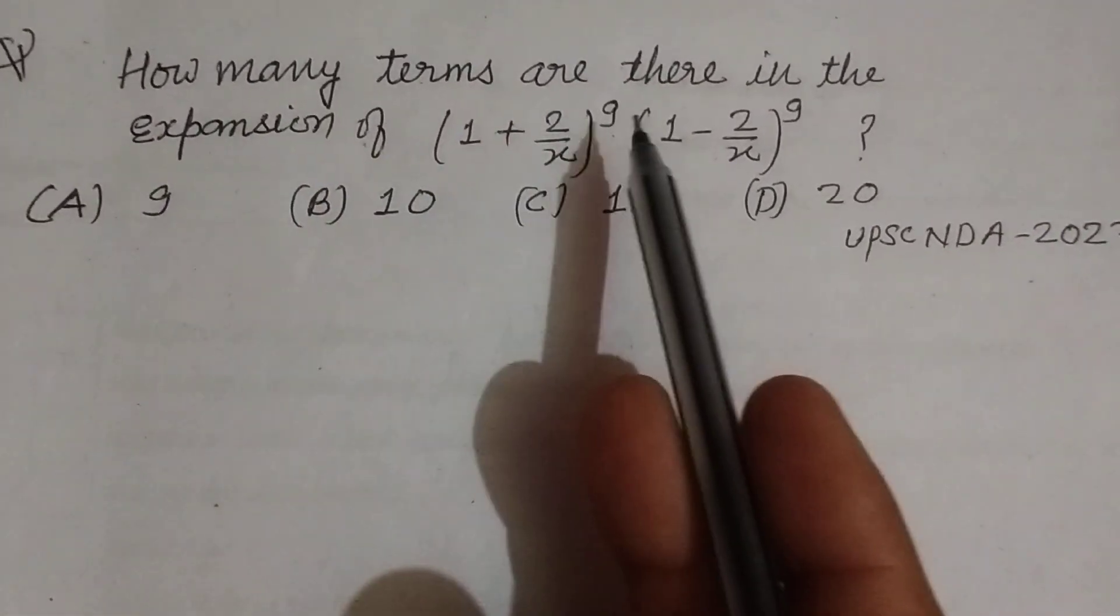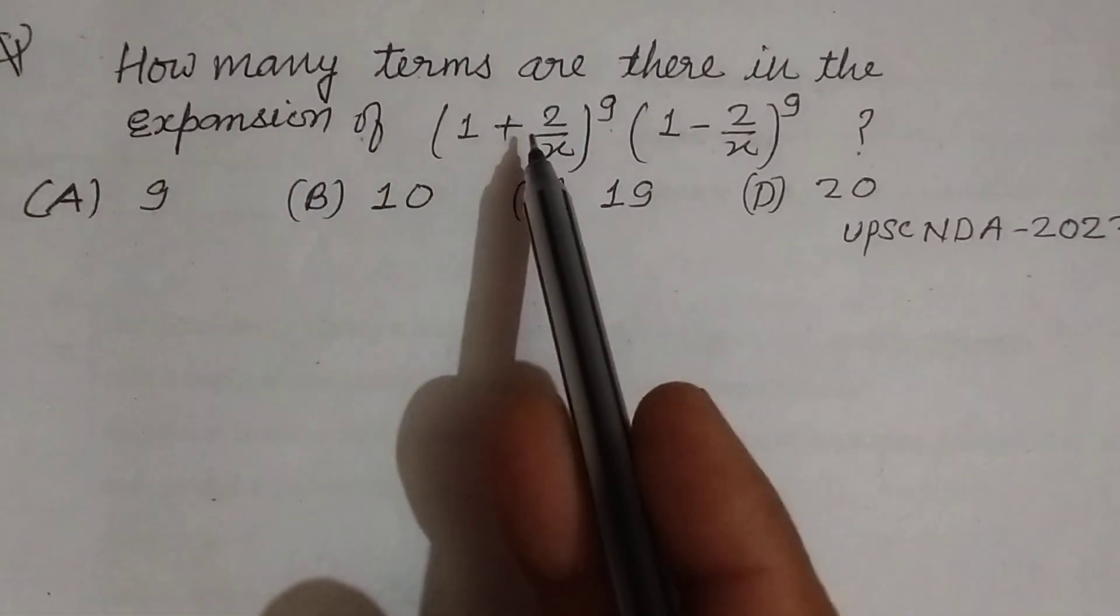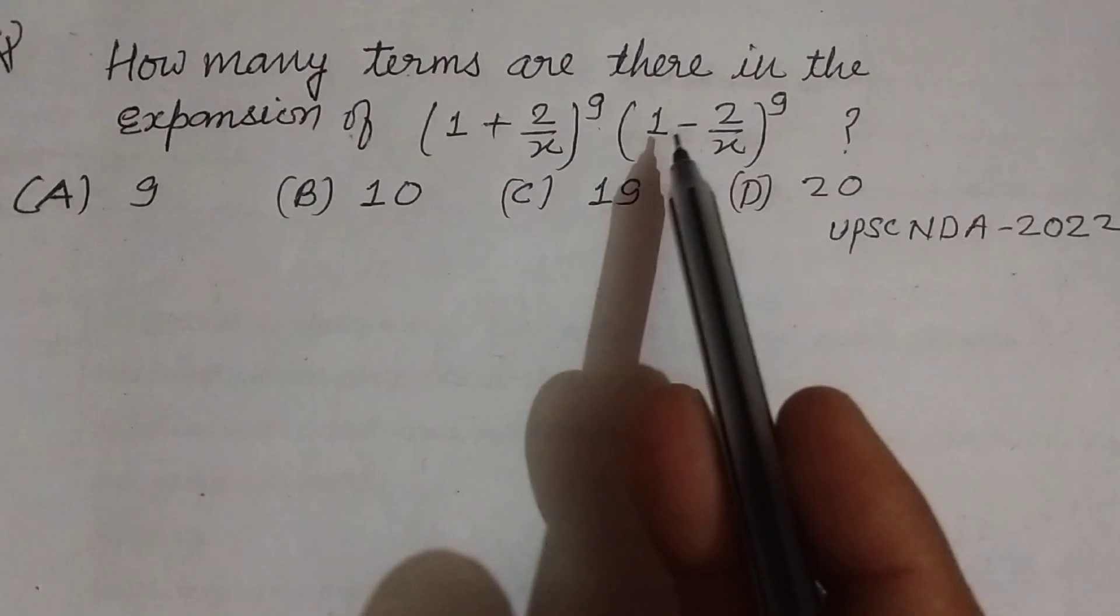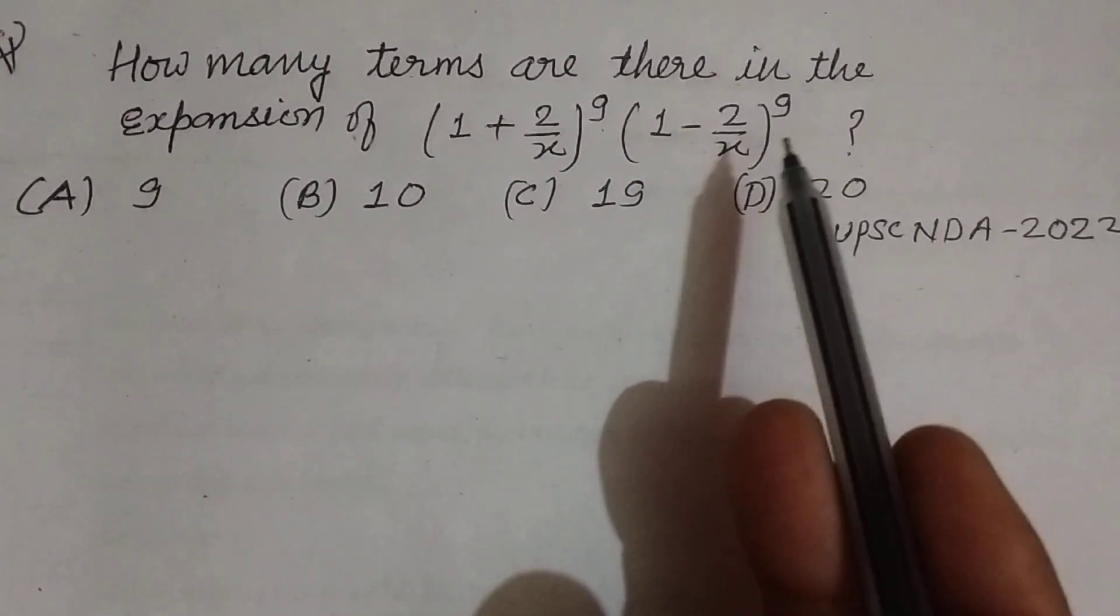How many terms are there in the expansion of (1 + 2/x)^9 × (1 - 2/x)^9?